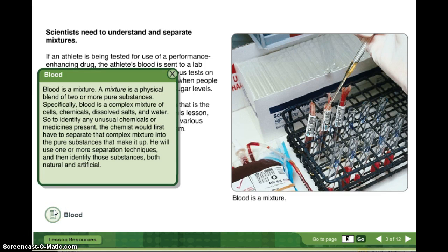Blood is a mixture. A mixture is a physical blend of two or more pure substances. Do you remember what your pure substances are? They are either elements or compounds. Specifically, blood is a complex mixture of cells, chemicals, dissolved salts, and water. So to identify any unusual chemicals or medicines present, the chemist would first have to separate that complex mixture into the pure substances that make it up. He will use one or more separation techniques and then identify those substances, both natural and artificial.